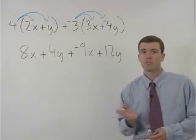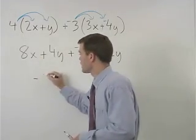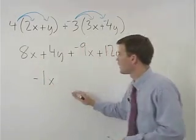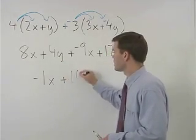Now we can combine like terms. 8x plus negative 9x is negative 1x and 4y plus 12y is plus 16y.